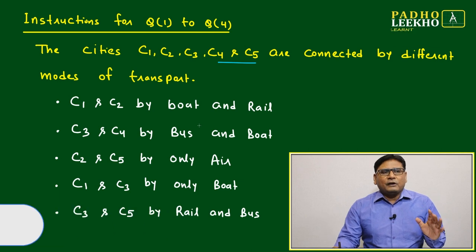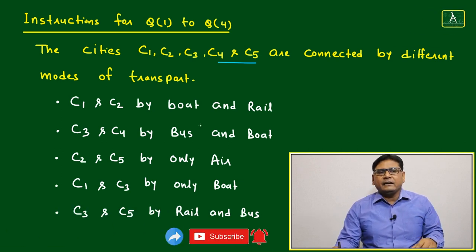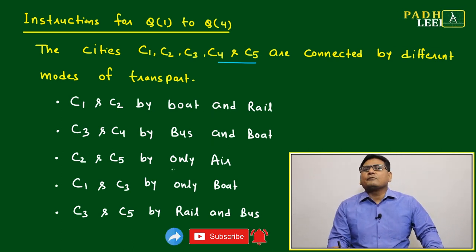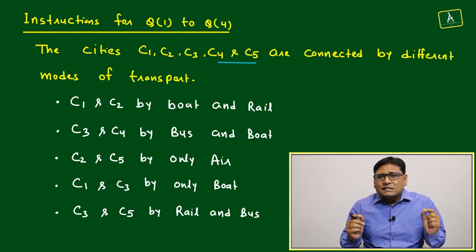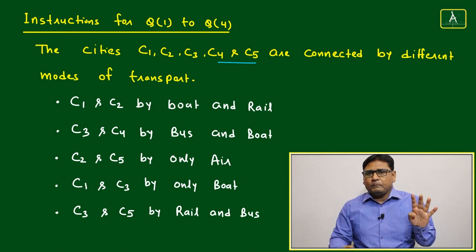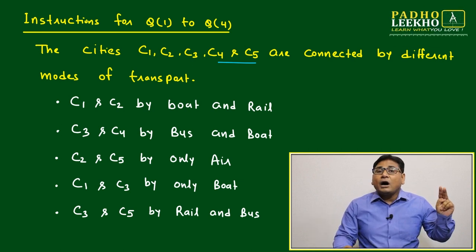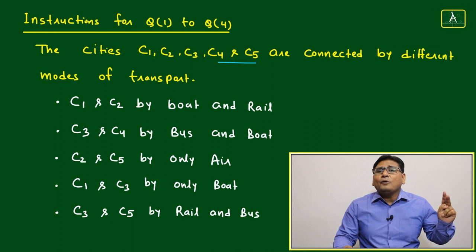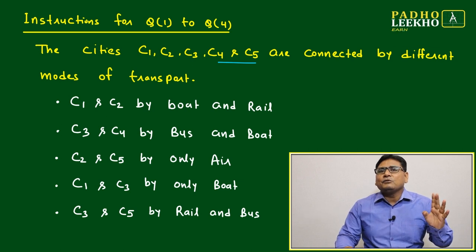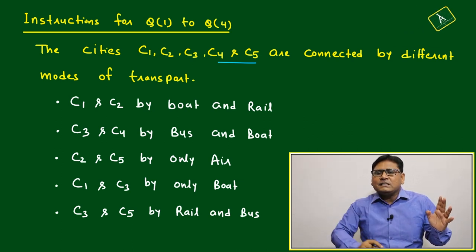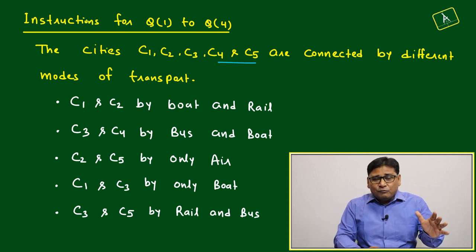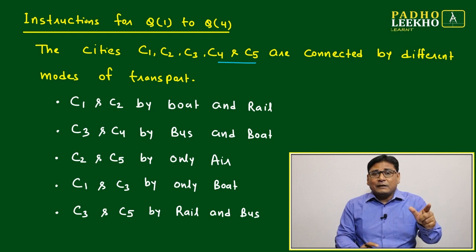There are a total of four types of transport: boat, rail, bus, and air — only four types. Between any two cities, the maximum possible modes of transport is four. This gives us the idea of how many different ways you can reach from one city to another. Mathematically, between any two cities, the maximum number of modes of transport can be four, but whether all four apply between a specific pair is unknown — we have to check the given conditions.